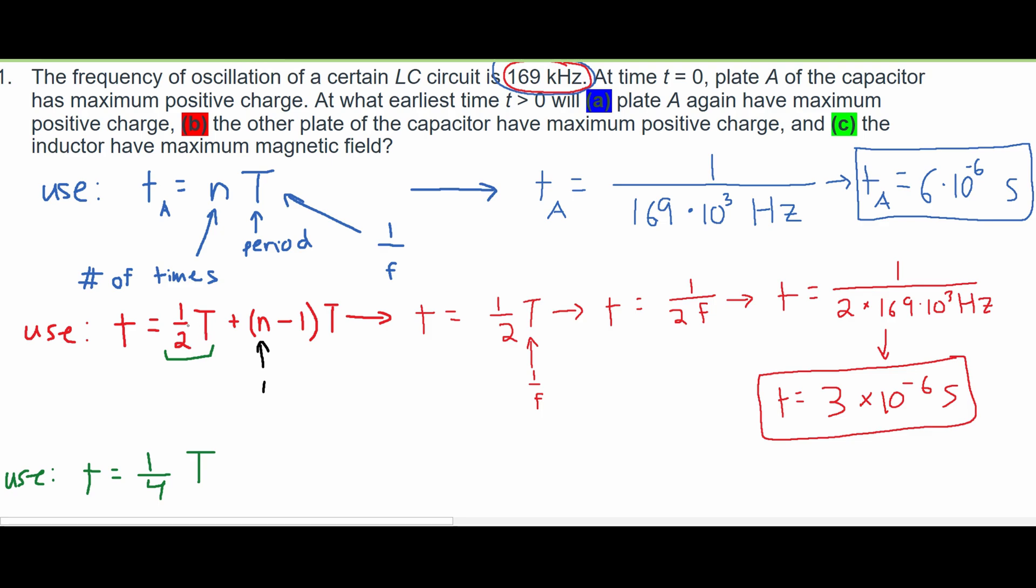And in part B, we see our period for the second plate is half that of our original period. But we have this second part after it, this n minus 1 times T.